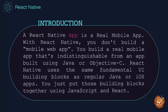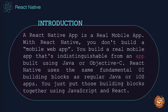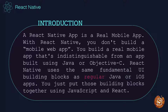A React Native application is a real mobile application. With React Native, we don't have to build a hybrid application. We build a real mobile application that's indistinguishable from an application built using Java or Objective-C. React Native makes use of the same fundamental user interface building blocks as regular Java or iOS applications — we just put those building blocks together using JavaScript and React.